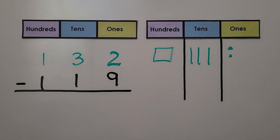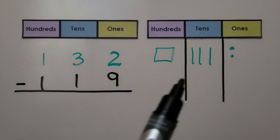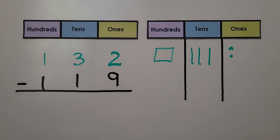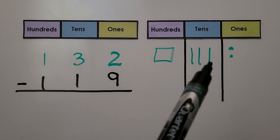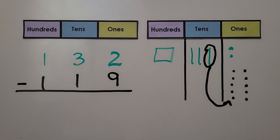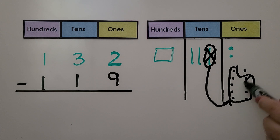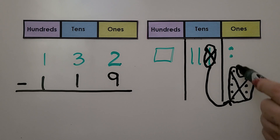And we can solve this problem with a quick drawing. We have 132 minus 119 — we draw the minuend: one hundred, three tens, two ones. We take one of these tens and break it into ten ones. Now that we took the ten and made it into ones, we can cross off the tens — it's not in the tens place anymore, it's now ten ones. Now we can take nine ones away, cross them off. That's going to leave three.